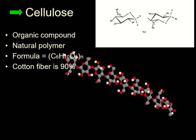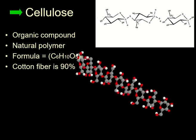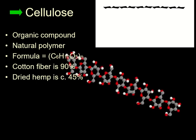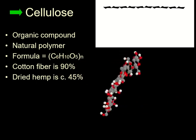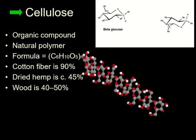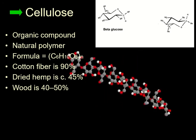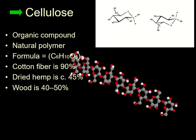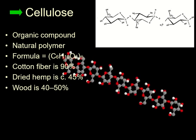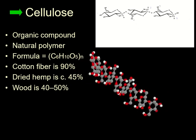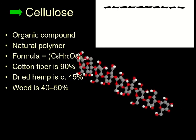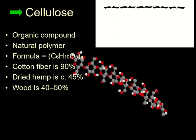And there's a lot of it in plants. Cotton fiber is 90% cellulose — very cellulose-y. Dried hemp is 45%, whereas wood is about 40-50% depending on the wood. So this is what most of the structure of plants are — what enables a plant to stand up and what makes plant materials useful for making stuff out of.